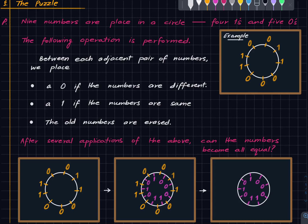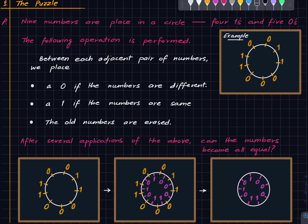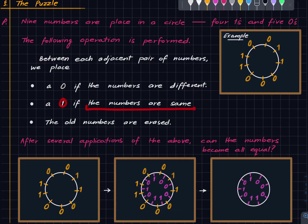Welcome to this puzzle session. Here is the problem: 9 numbers are placed in a circle, 4 of which are 1s and 5 of which are 0s. Here is an example. The following operation is performed: between each adjacent pair of numbers, we place a 0 if the numbers are different, and a 1 if the numbers are the same.